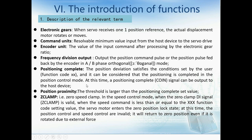Position proximity has a threshold larger than the positioning complete set value. In speed control mode, when the zero-clamp digital input signal is valid and the speed command is less than or equal to the function code setting value, the servo motor enters the zero-position lock state. At this time, position control and speed control are invalid, and it will return to zero-position even if rotated due to external force.